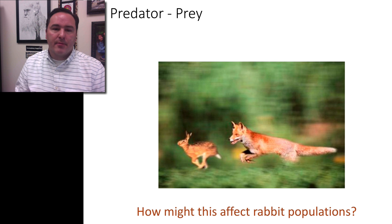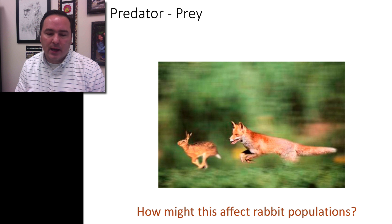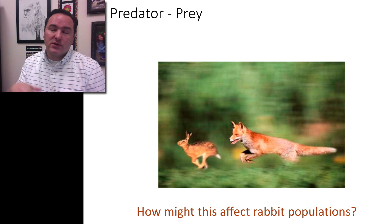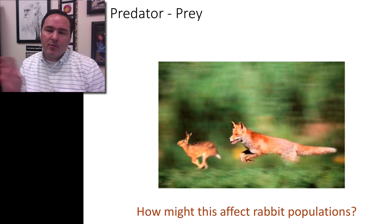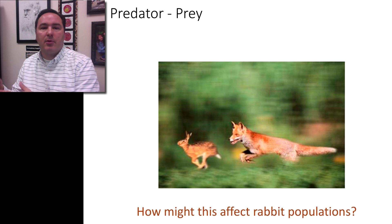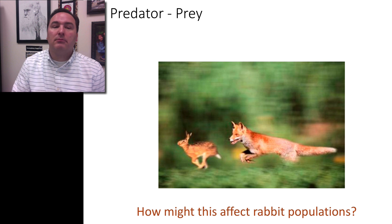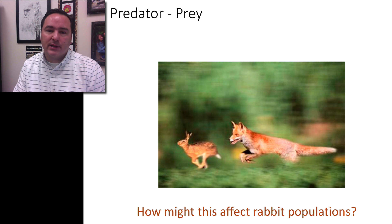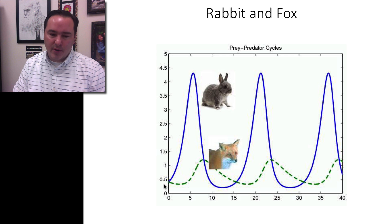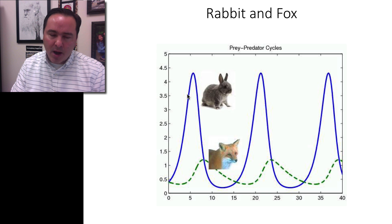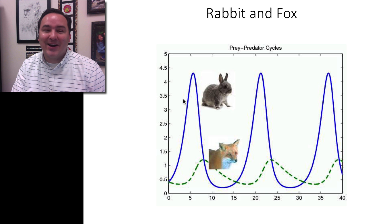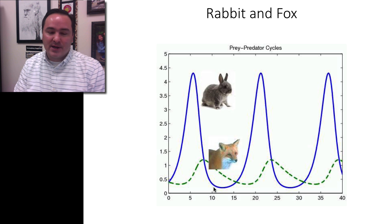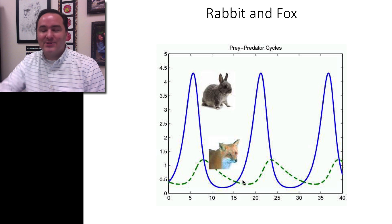Finally, let's talk about predator and prey. Predator and prey are interesting because they can be part of density-dependent factors, but they could also be part of density-independent. In this case, we'll look at the density-dependent example, which only happens when you have a tight predator-prey relationship where the predator mainly eats the prey and the prey is mainly eaten by the predator. When this is the case, you'll see a cyclical nature: the rabbit population increases, the fox population right behind it increases, but then the foxes eat enough rabbits that the rabbit population declines, then there aren't enough rabbits so the fox population declines, and so on.